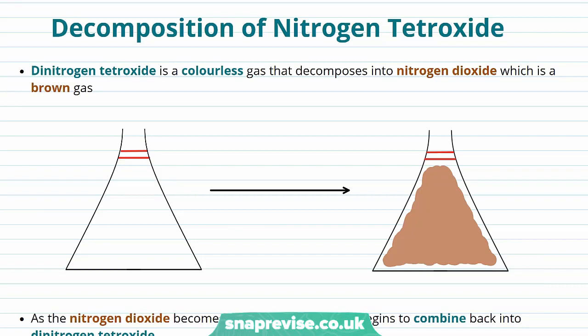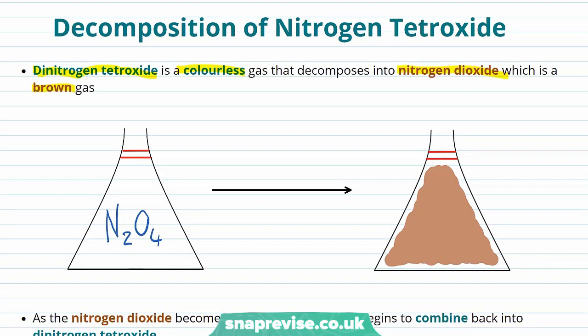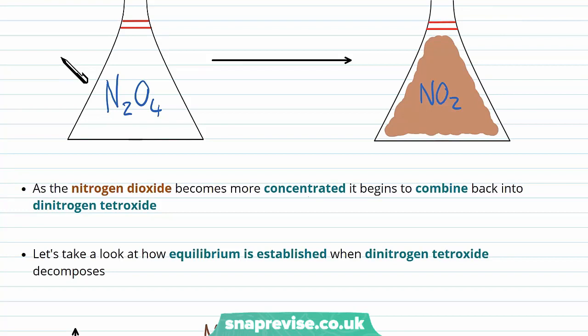Now the reactions continue happening in both ways. Let's look at a chemical example of a reversible reaction. Dinitrogen tetroxide is a colourless gas that decomposes into nitrogen dioxide, a brown gas. If we think about these stoppered flasks — the red shows they're stoppered to keep the gases in — we have clear dinitrogen tetroxide (N2O4) decomposing into a brown gas, nitrogen dioxide (NO2). As the nitrogen dioxide becomes more concentrated, it begins to combine back into dinitrogen tetroxide. This is the condition we need to establish an equilibrium.